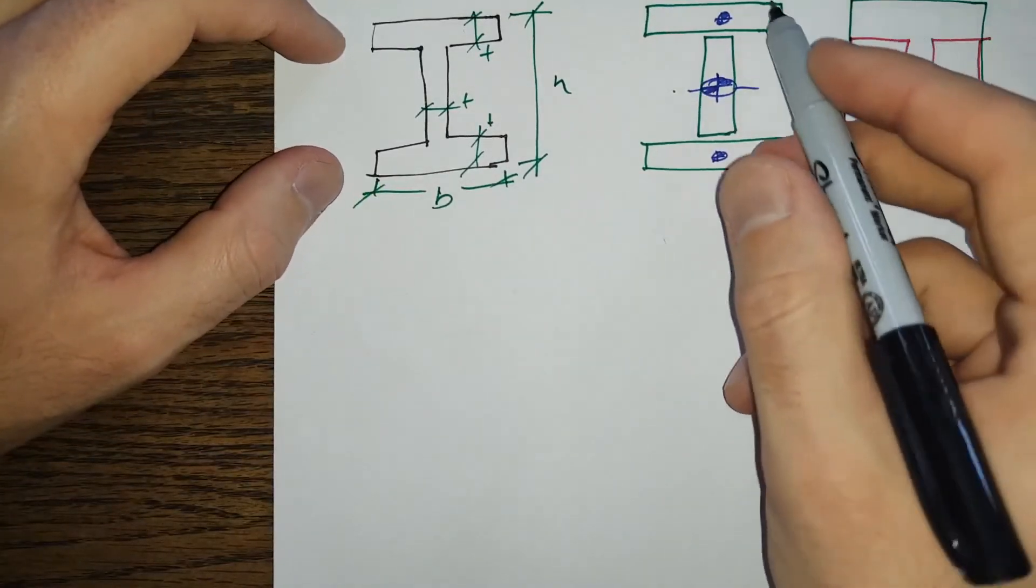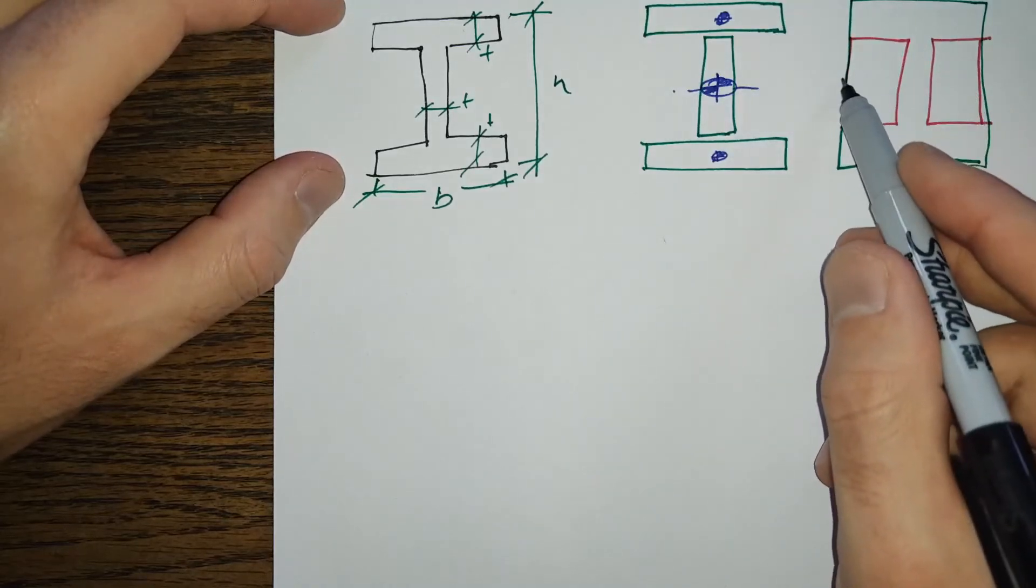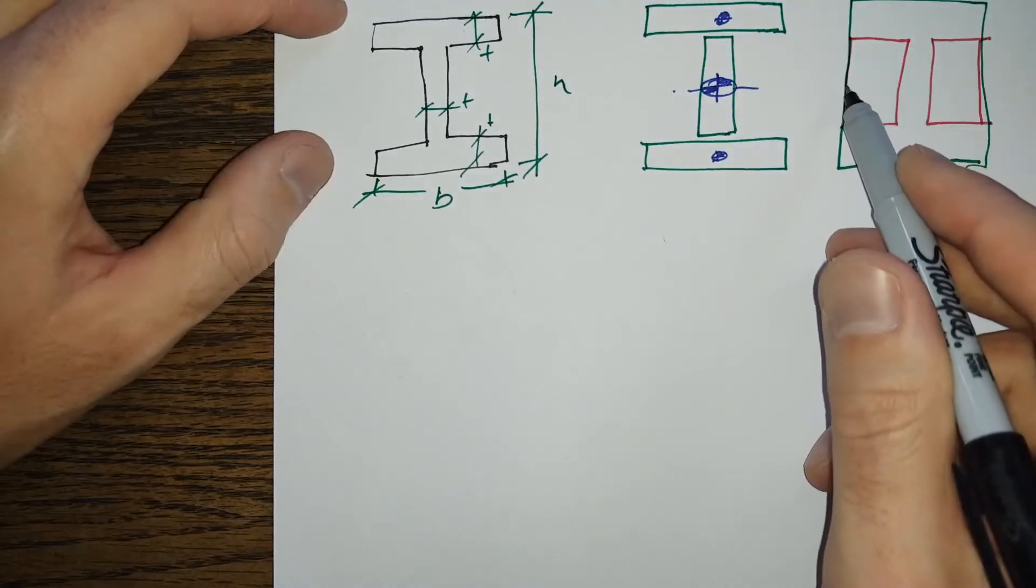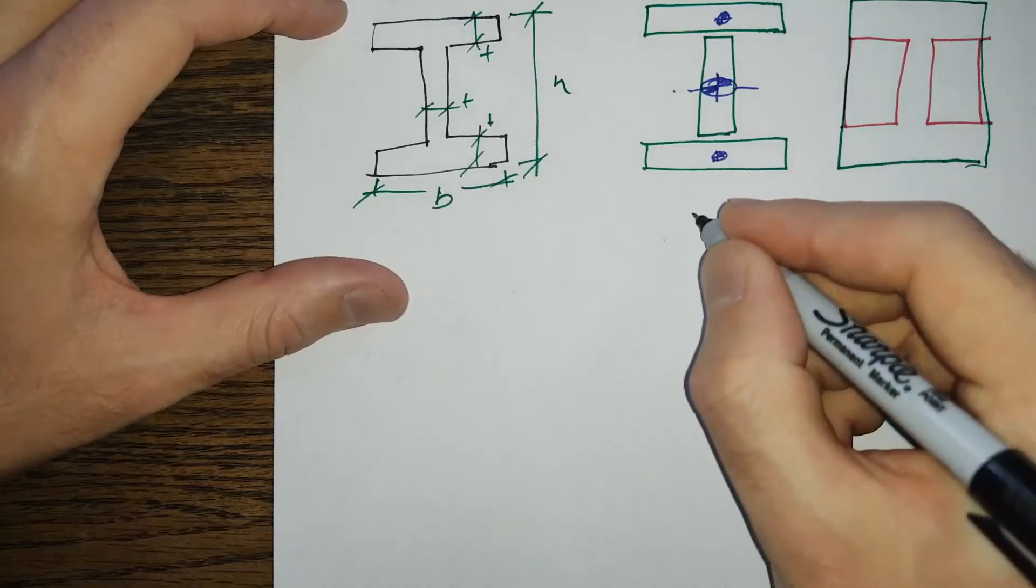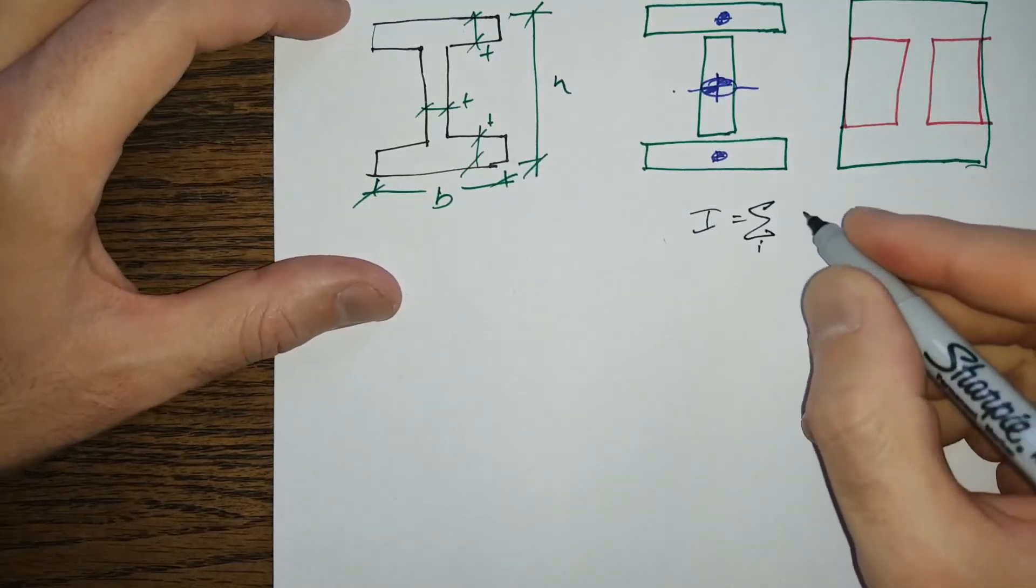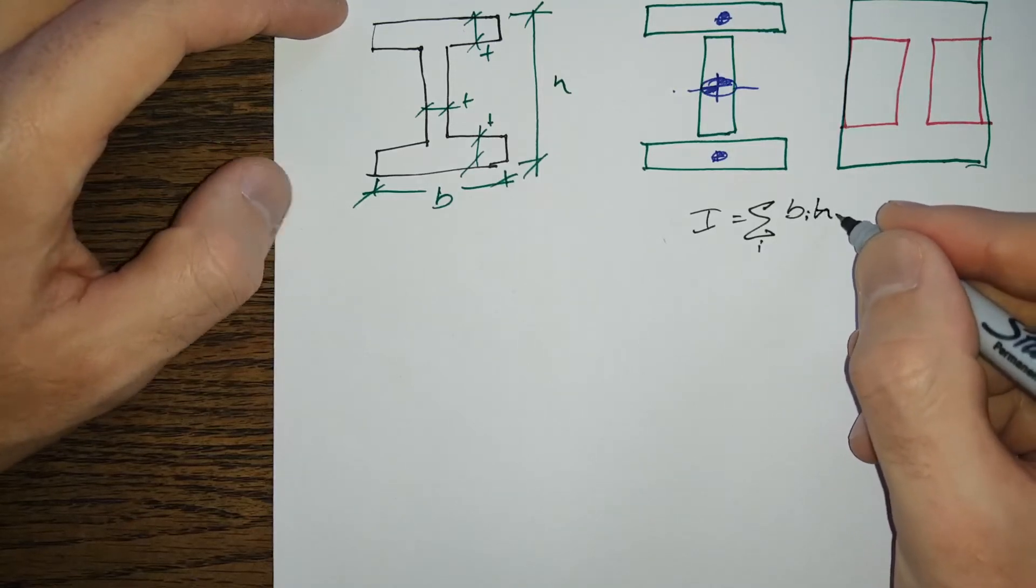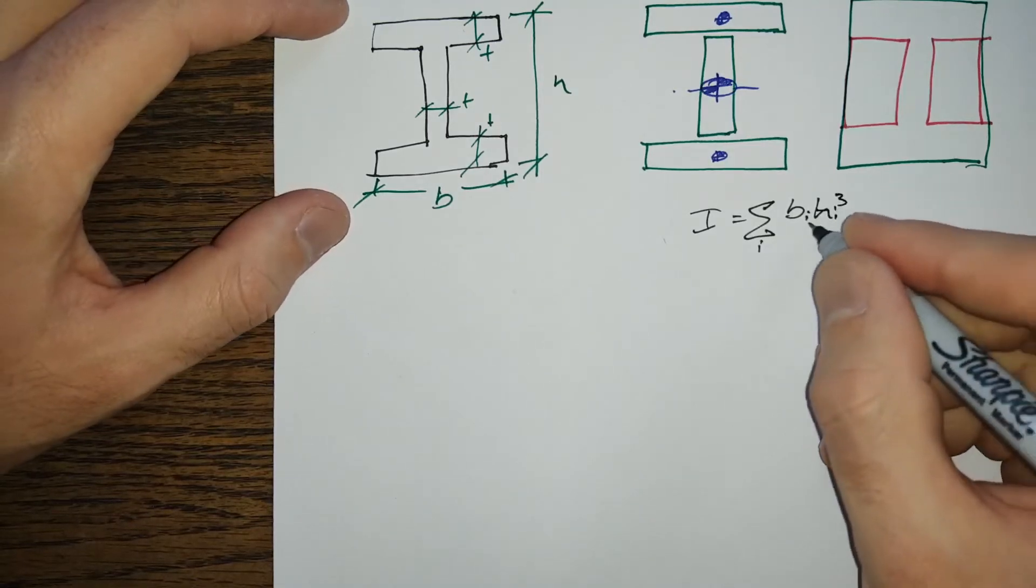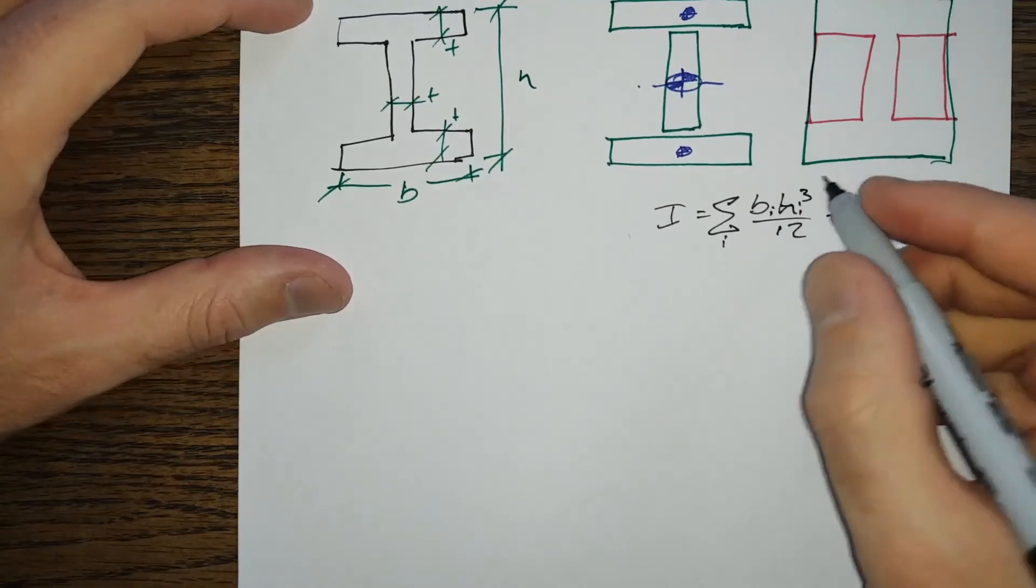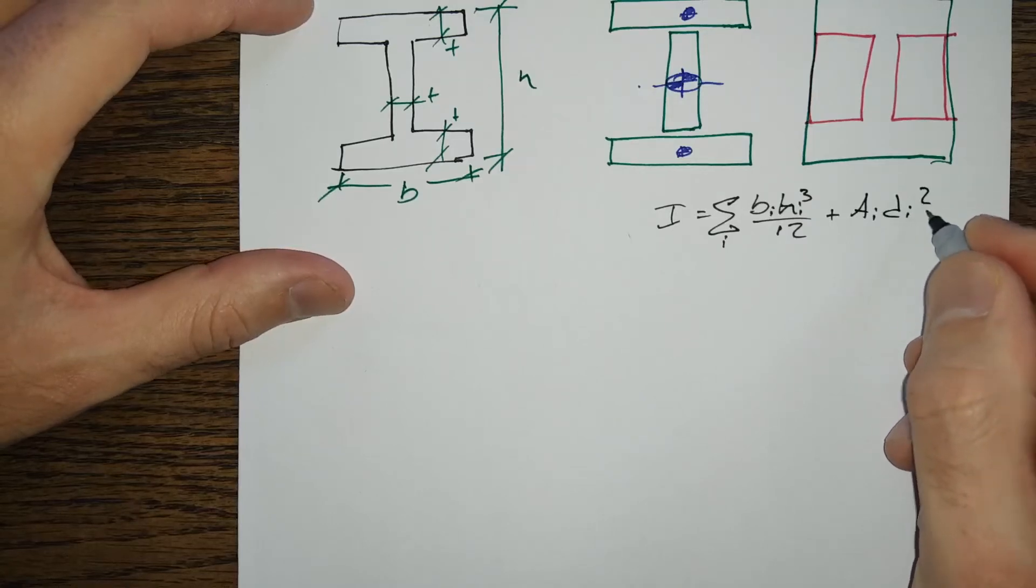So running this real quick, I'm going to take this route just so that we can see, because this one, all the distance terms are going to go to zero again. I is equal to, in this case, the sum of the bh cubed over 12 plus A d squared.